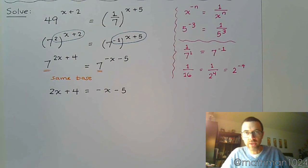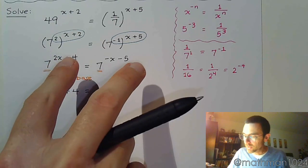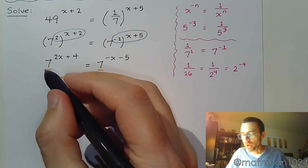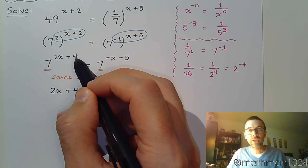So let me caution you about something. Once you have the same base, as we've mentioned, it's the powers that are equal. Okay? You are not doing 7 times 2x plus 4. 7 doesn't distribute, it's just the base.